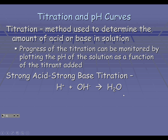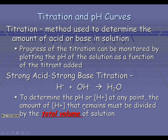Now, as you are working through the titration, there are a couple of things to keep in mind. To determine the pH or the hydrogen ion concentration at any point during this titration, the amount of hydrogen ions present must be divided by the total volume of the solution. Notice I have that in red — that is really important. We are changing up a little bit how we have worked before.